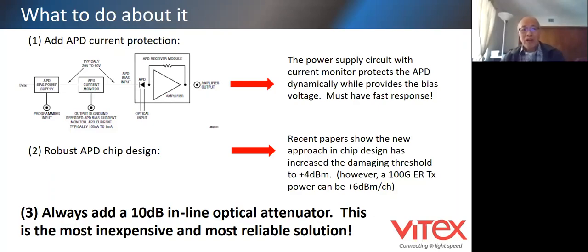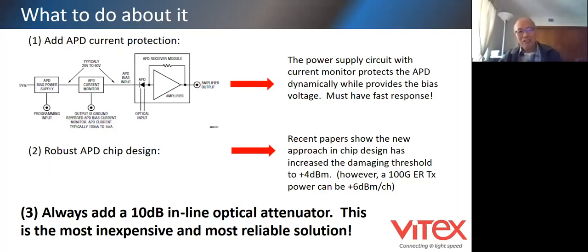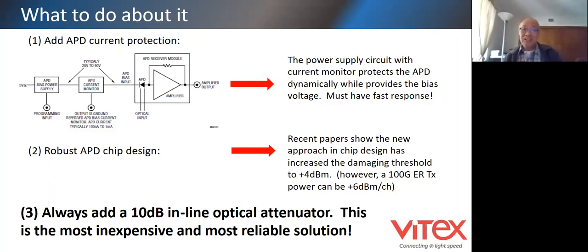The third point is that when you deal with an APD receiver, you should always use inline attenuation in front of the ROSA. I think 10 dB inline attenuation in front of the ROSA is very safe. This is the most inexpensive and most reliable solution for the user. It's an inconvenience, but as a good practice you should use it.